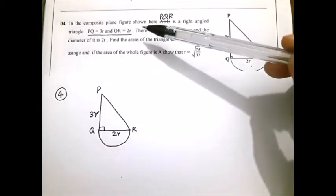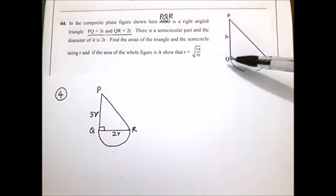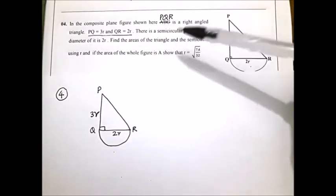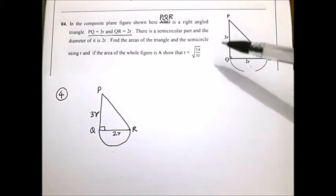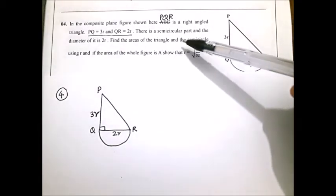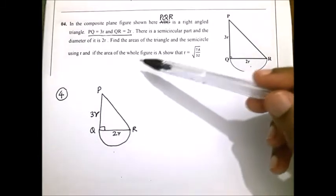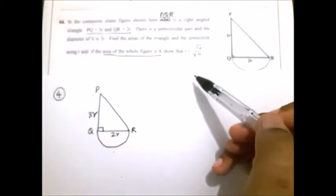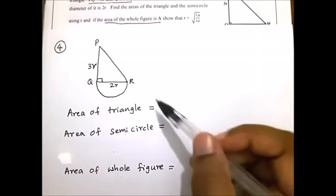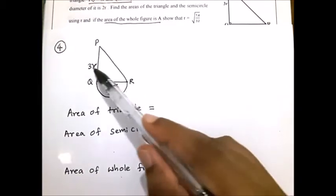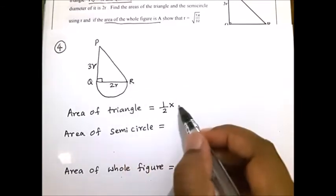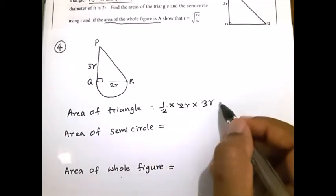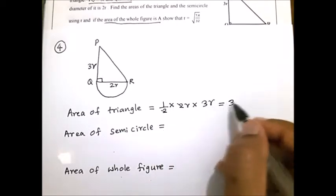Look at question number 4. In the composite plane figure shown, PQR is a right-angled triangle with PQ = 3R and QR = 2R. There is a semicircular part with diameter 2R. Find the area of the triangle and the semicircle using R. Area of triangle equals half times base times perpendicular height: half multiplied by 2R multiplied by 3R. Cancelling: 1 multiplied by 3 gives 3, R multiplied by R gives R². Area of triangle equals 3R².